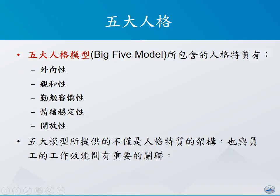五大人格模型当中，它把人格特质分成以下五项：首先是外向性，再来是亲和性，再来是勤勉谨慎性，再来是情绪稳定性，以及最后一个叫做开放性。透过这五种不大一样的人格特质分类，可以帮助我们了解员工跟工作效能的关系，同时也可以了解在不同的任务之下，可能具备什么样特质的人会比较适合担任。